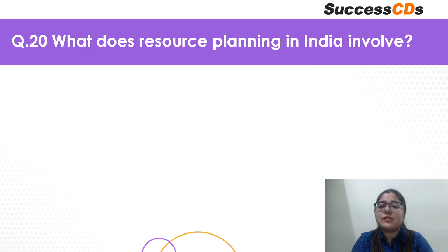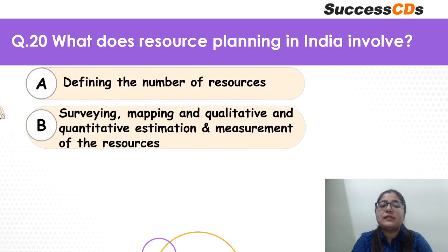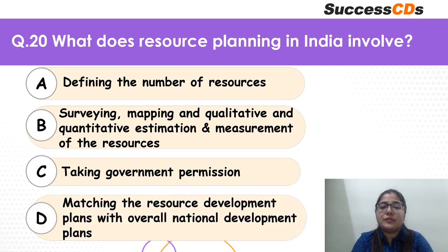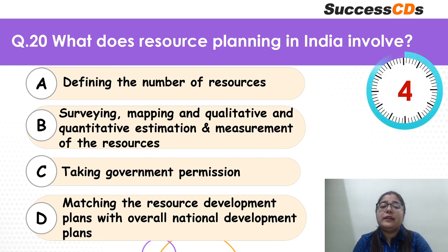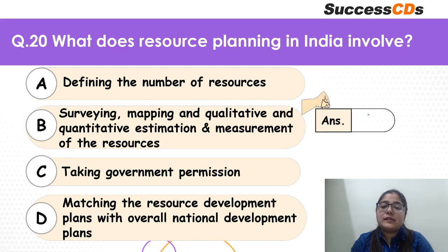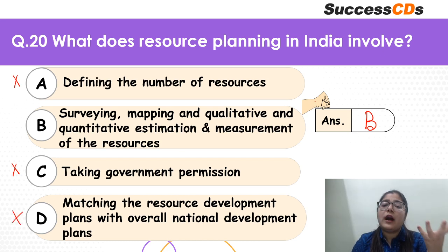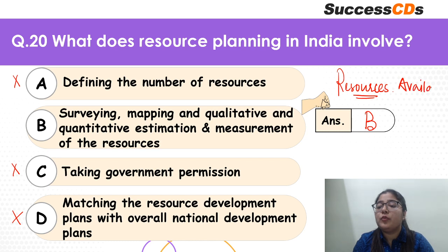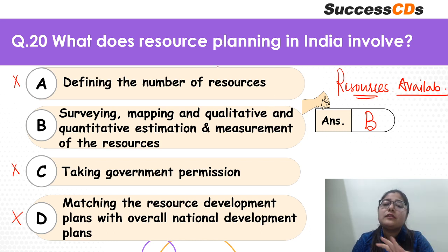Let's move to question 20: what does resource planning in India involve? Defining the number of resources? Surveying, mapping and qualitative and quantitative estimation and measurement? Taking government permission? Or matching resource development plans with overall national development plans? B is the correct answer. Government permission has nothing to do with resource planning. Resource planning means knowing what availability you have — you survey, map, and estimate based on other factors. That is what is meant by resource planning.